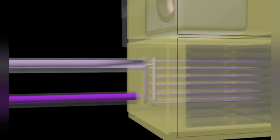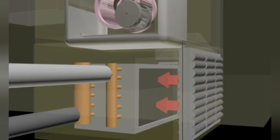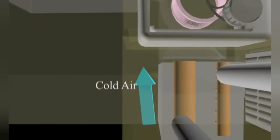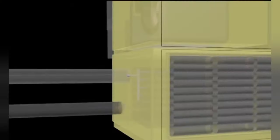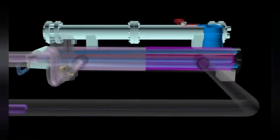In the air handling unit, chilled water passes through the cooling coil. Hot air passes over the cooling coil and is converted to cold air as heat transfers to the chilled water. The cooling coil commonly used is the tube and fin type. After absorbing heat, the chilled water is known as chilled water return, carried by a light blue colored pipe back to the chiller to transfer heat to the refrigerant in the evaporator.